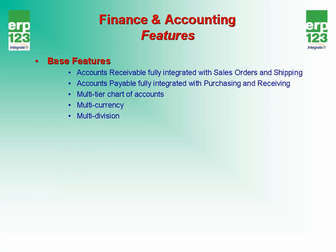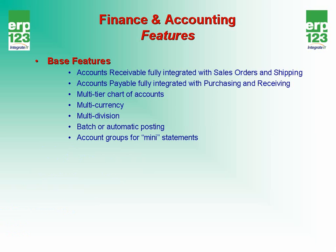The system supports multi-division accounting, which is having multiple divisions within the same database, and you can choose to batch or automatically process accounting transactions, which is called posting. Account groups and departments are used to create mini statements. Both of these represent categories and you can assign these categories to accounts within your system, giving you the ability to produce mini P&Ls either by account group or by department.